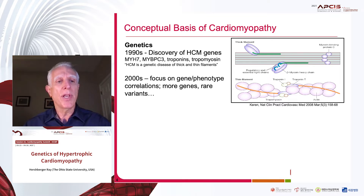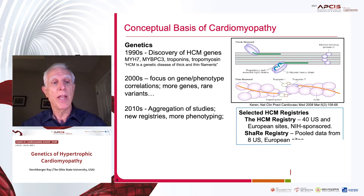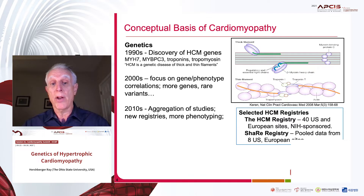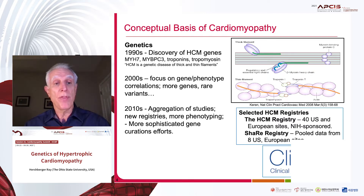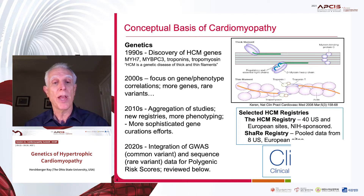In the 2000s, the focus was more so on gene and phenotype correlations with more attention to additional genes and also more rare variants. Then in the 2010s, the aggregation of studies with new registries — the HCM registries and also the SHARE registry — and more sophisticated gene curation efforts. ClinGen was next, with the integration of GWAS with common variant and rare variant data for polygenic risk scores, and I'll comment on that below.